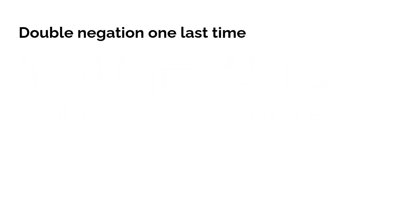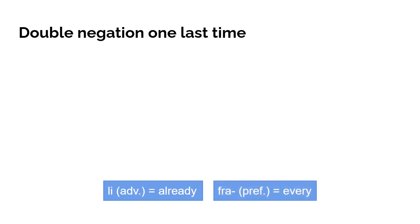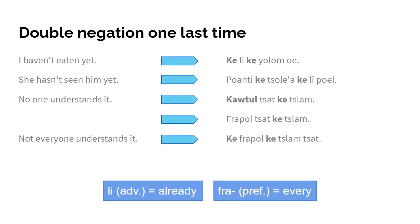Double negation one last time — there are also some very rare instances where 'ke' can go in front of something other than a verb. You can use it together with 'li,' which means 'already,' and the combination 'ke li' then means 'not already,' which in English is 'not yet.' Looking at this in practice: 'I haven't eaten yet' becomes 'ke li ke yolom oe' — again double negation. 'Ke li' means 'not yet' and 'ke yolom' means 'not eaten,' so both need to be negated.